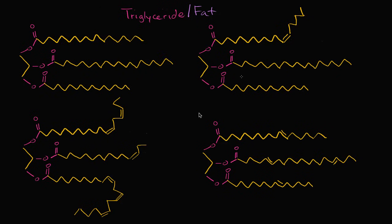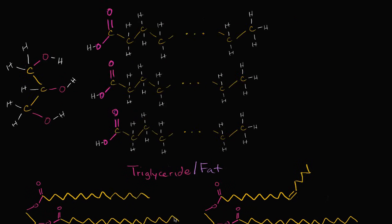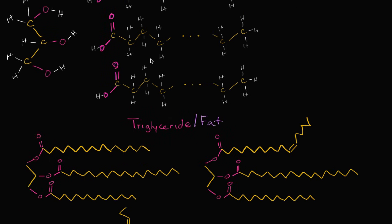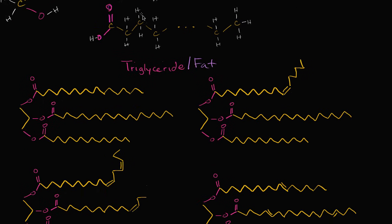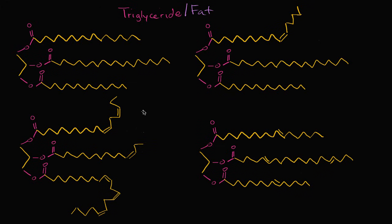I have drawn four different triglyceride molecules over here, and some of you might be saying, wait, I thought triglycerides involved all of these carbons and hydrogens and oxygens. I see the oxygens over here, but where are all of the carbons and hydrogens? My answer is that they will be implicit. This is a shorthand way of diagramming large molecules, and you'll see this many times when you take chemistry, biology, organic chemistry.